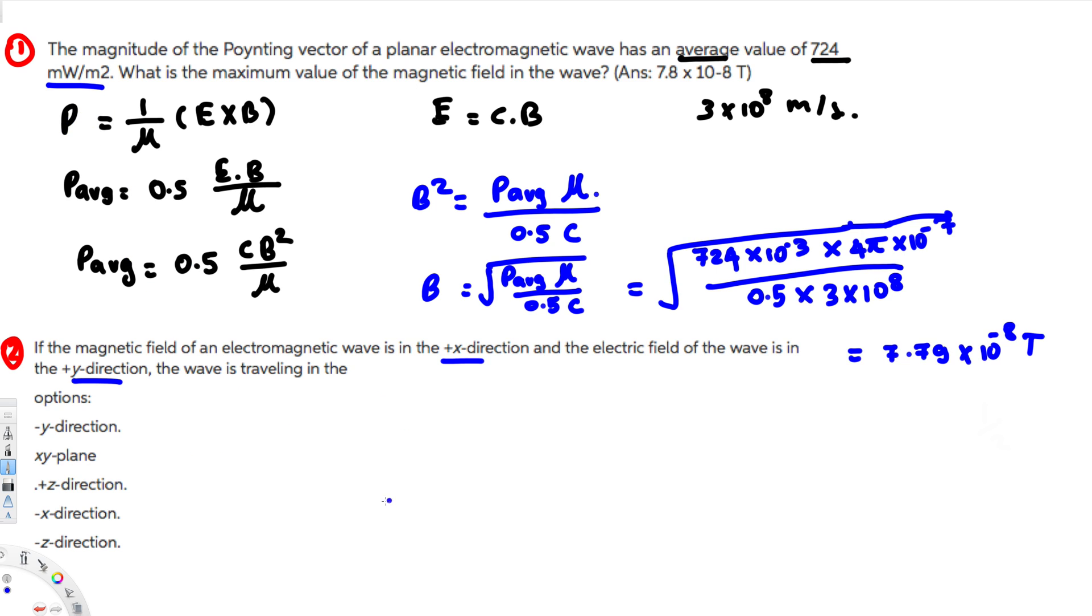So Poynting vector, that is equivalent to E cross B, right? So we only talk about the direction, we are not calculating any value. So I'm getting rid of this μ because we only look at the direction right now. So here electric field is in the plus y direction, right? So plus y we call j hat cross.